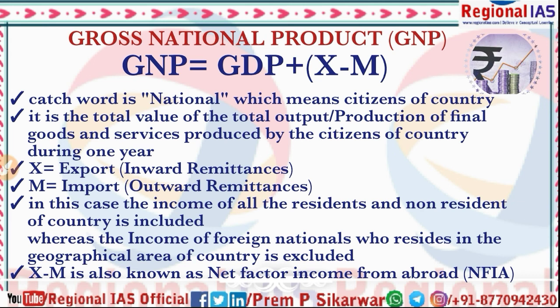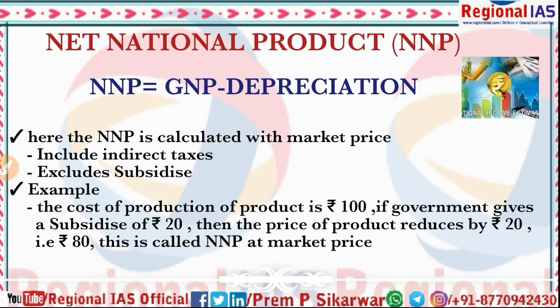Whereas the income of foreign nationals who reside in the geographical area of the country is excluded from GNP. For example, if an American person is working in India and sending some money abroad, that is not part of India's GNP — it is excluded. The X−M value is also known as Net Factor Income from Abroad (NFIA).